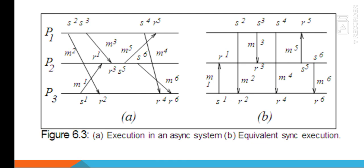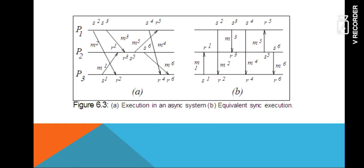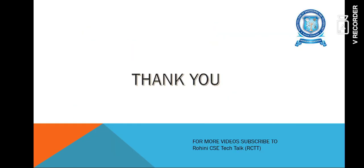In an asynchronous system you may receive messages in any order, whereas in synchronous execution all communications are represented as a vertical line, meaning the send event and the receive event happen at the same time. All events are atomic and independent in nature. With this we have concluded message ordering paradigms. Thank you.